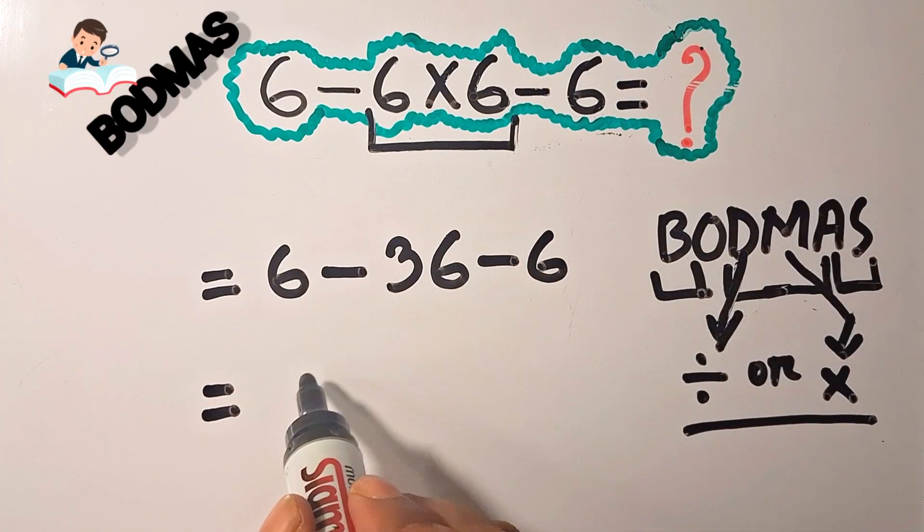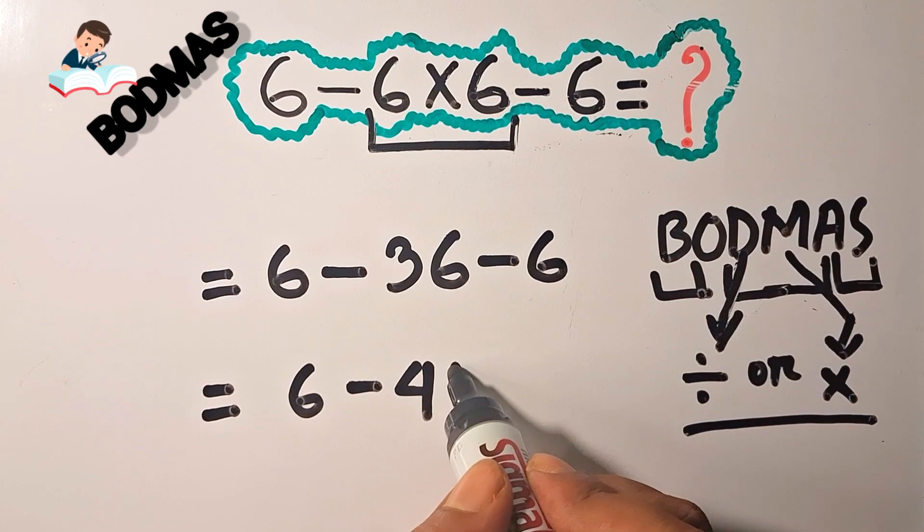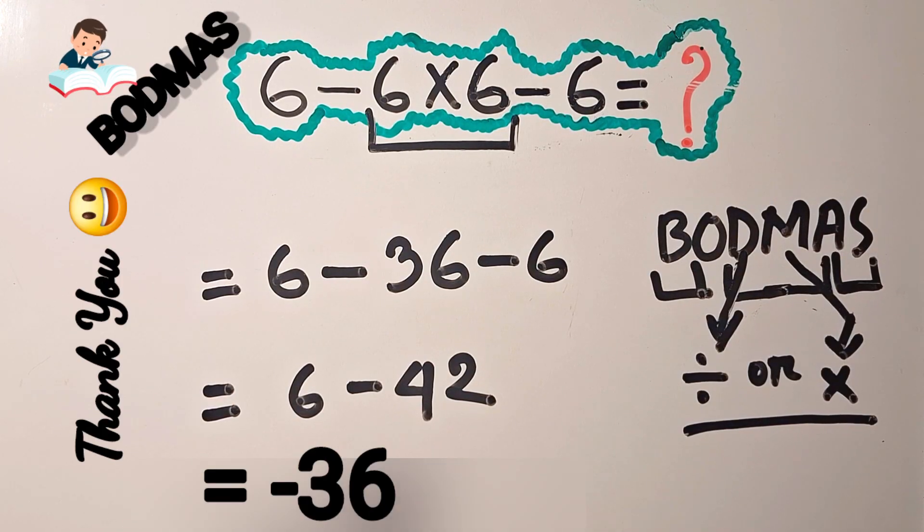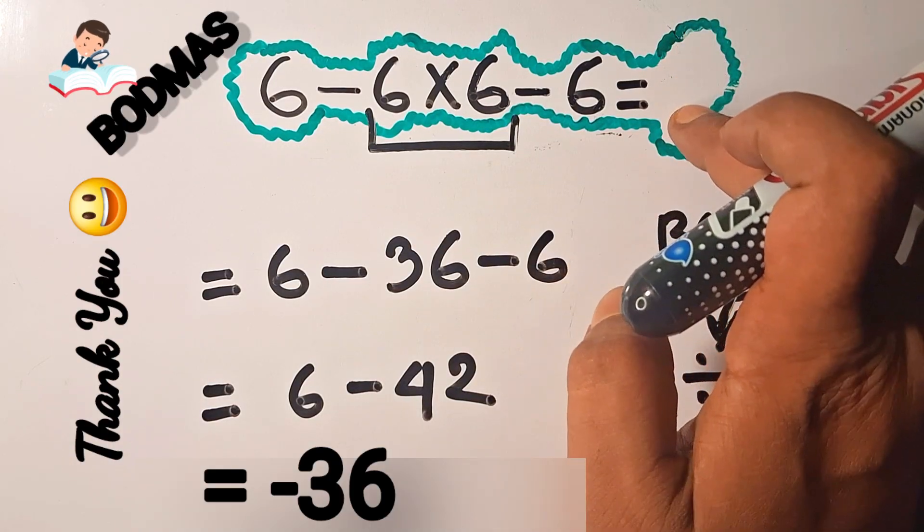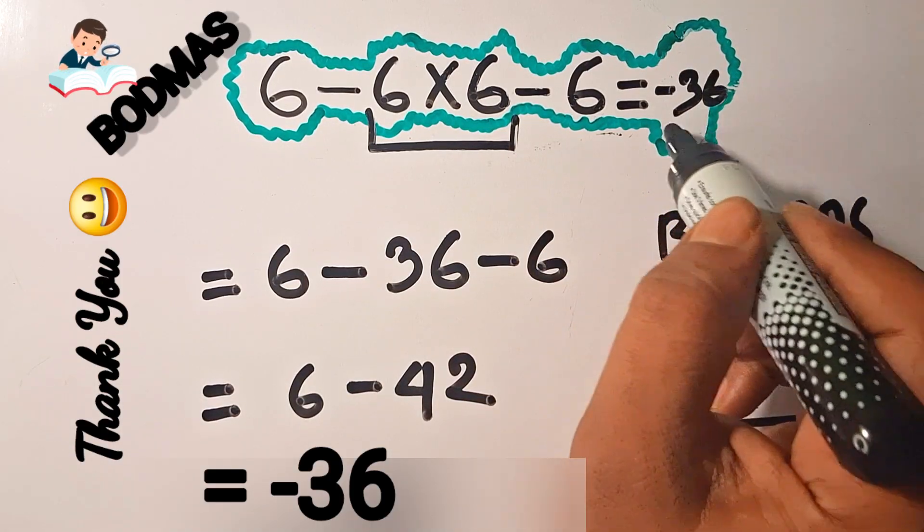6 minus 36 minus 6. Combining 36 plus 6 equals 42, so 6 minus 42 equals minus 36. This is the right answer. If you have another opinion, please comment. Thank you.